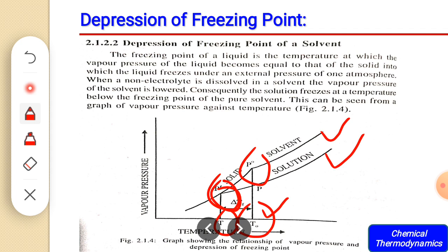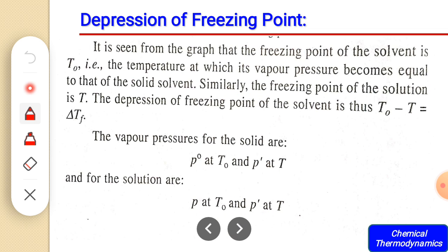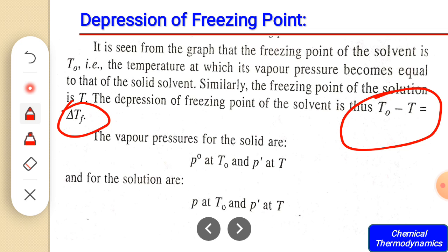We now have two freezing points: one is the freezing point for the pure solvent indicated by T₀, and another is the freezing point for the solution indicated by T. The difference between these two — that is, freezing point of pure solvent minus freezing point of solution — is called the depression of freezing point, indicated by ΔTf.